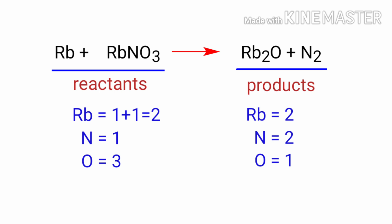The number of atoms are not balanced on both sides. To balance the chemical equation, we need to make use of coefficients. A coefficient is a number that we place in front of a chemical formula.